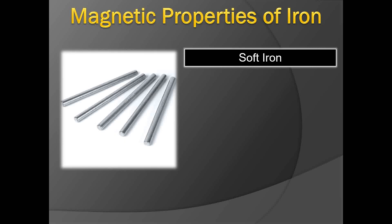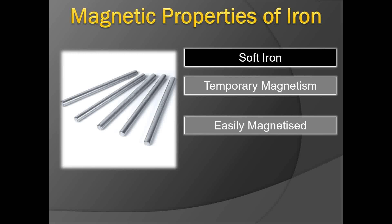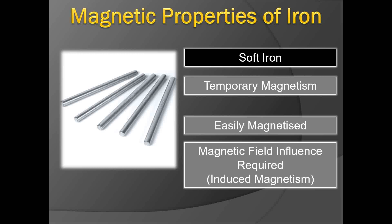Soft iron, on the other hand, is easy to magnetize but also quickly loses its magnetism. Soft iron is magnetized only when under the influence of a magnetic field and only in the direction of that field. As soon as the field ceases to act, the soft iron ceases to be magnetized and loses its acquired magnetism. Since its gain and loss of magnetism is very quick, it is called temporary or induced magnetism.